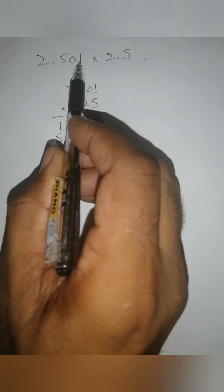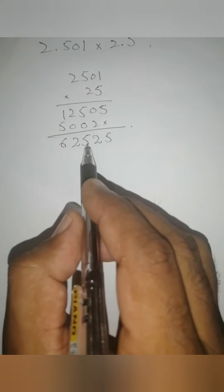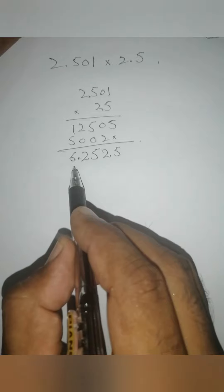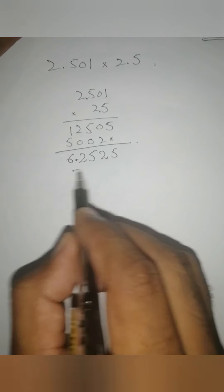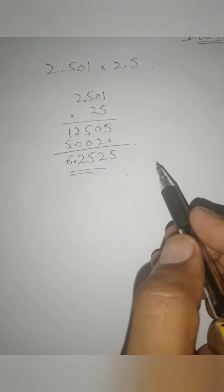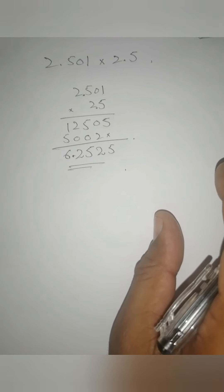Here we removed the decimal which was after 3 digits. And in the second number it was after 1 digit. One digit and three digits. So in the answer, after 4 digits you have to fix it again. One, two, three, four. If you apply this, it becomes: your answer is 6.2525. This is it, very easy. Ignore the decimal, do simple multiplication. Then at the end, put the decimal back. So this is how multiplication happens.